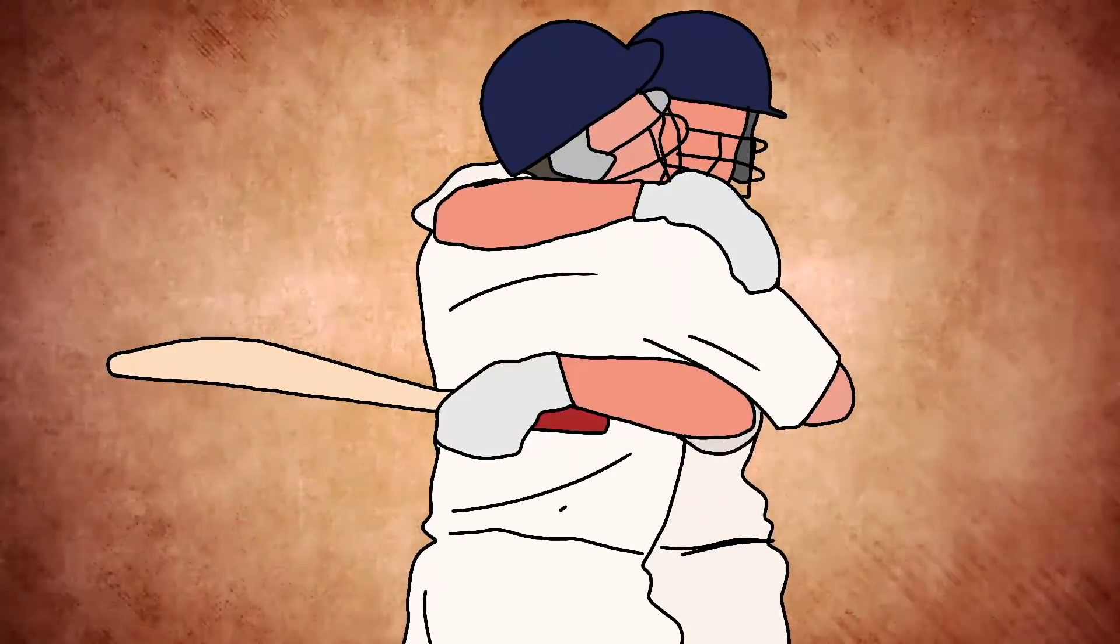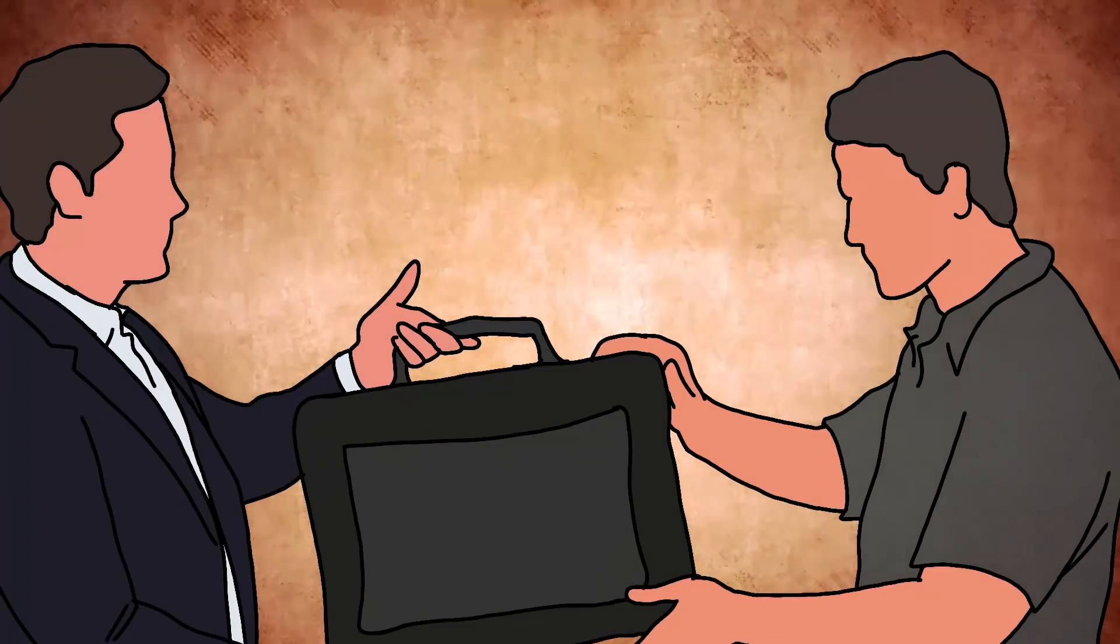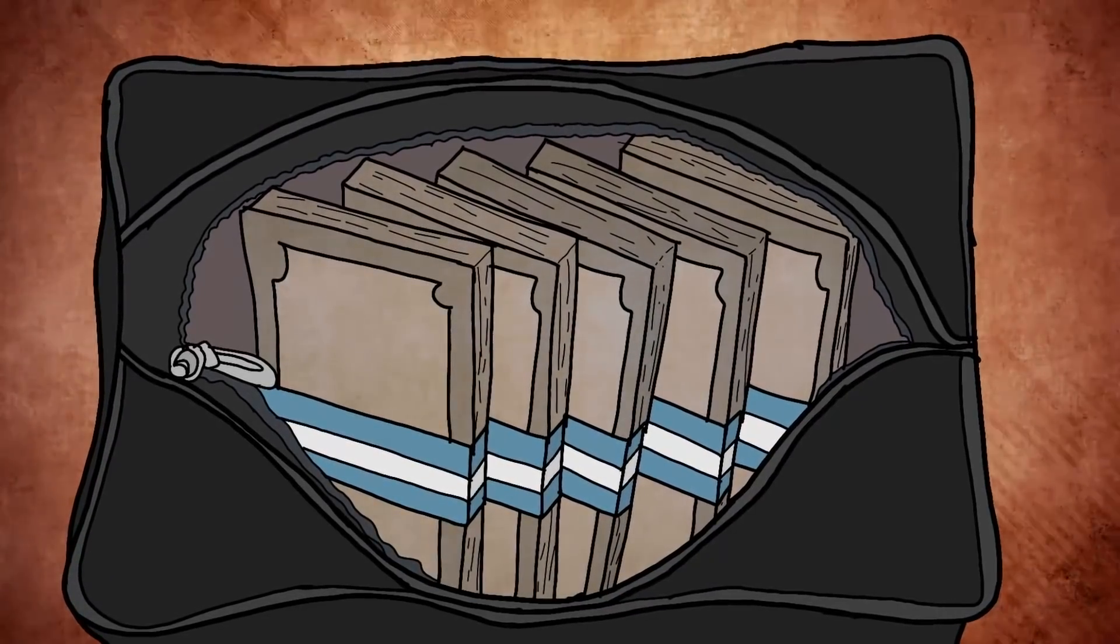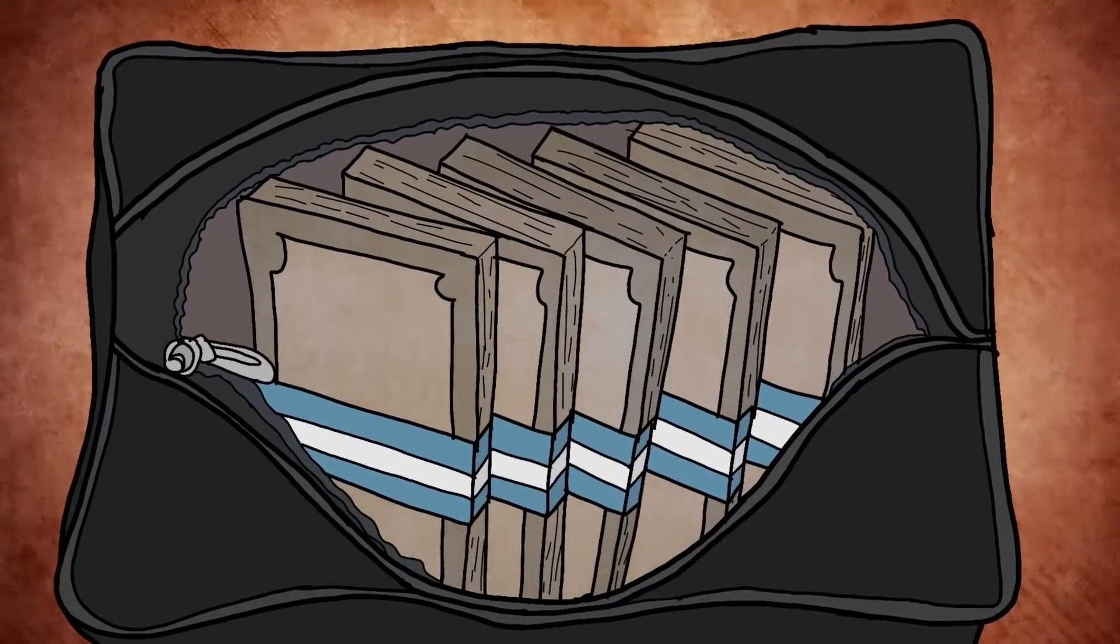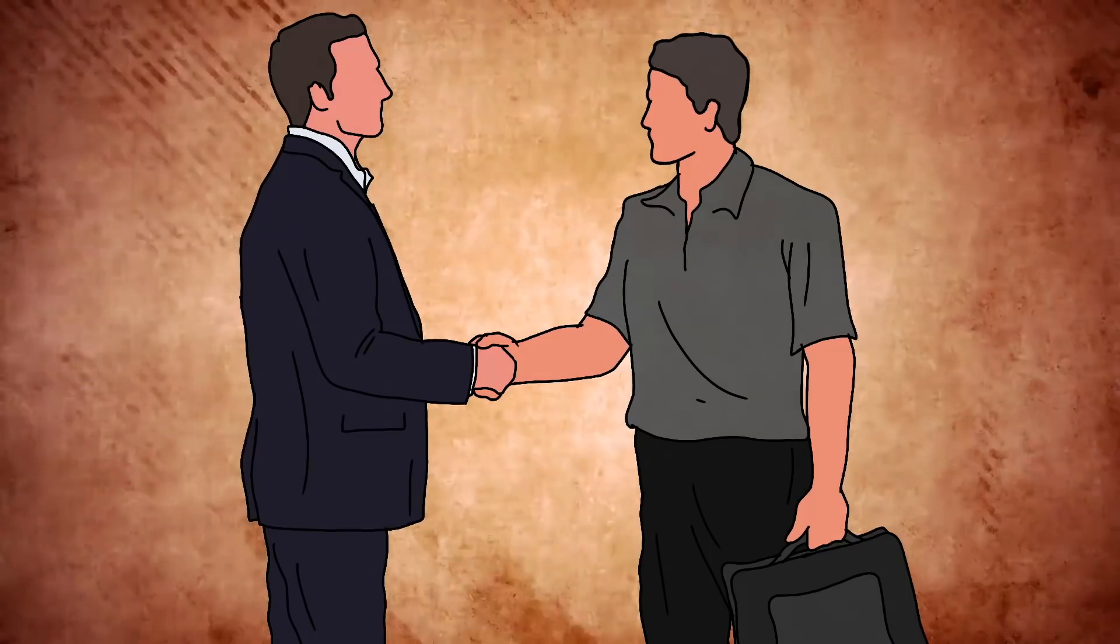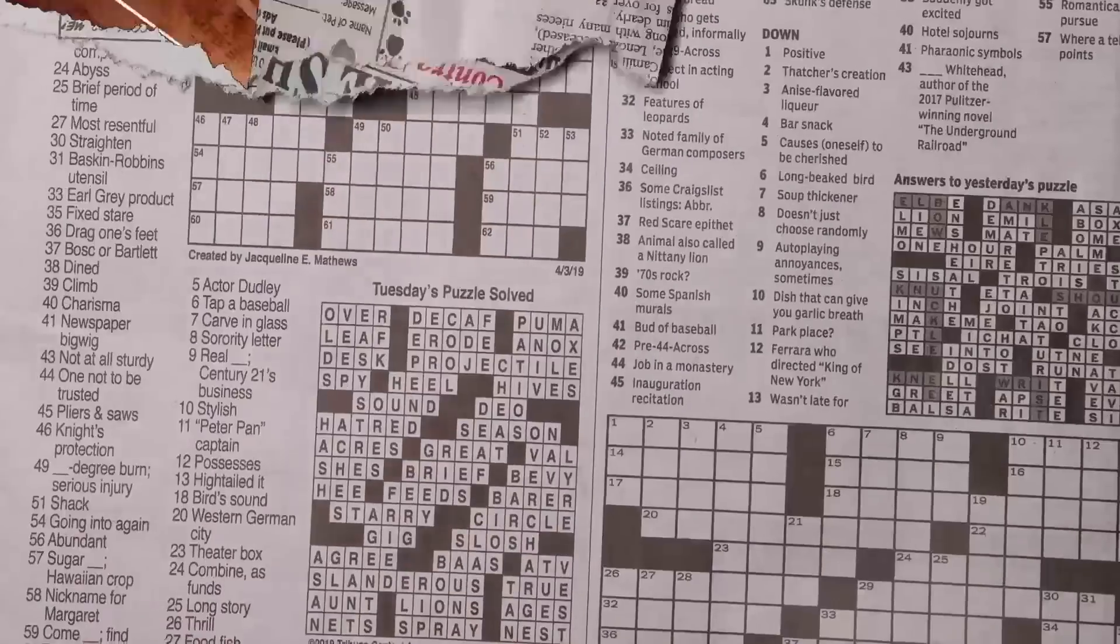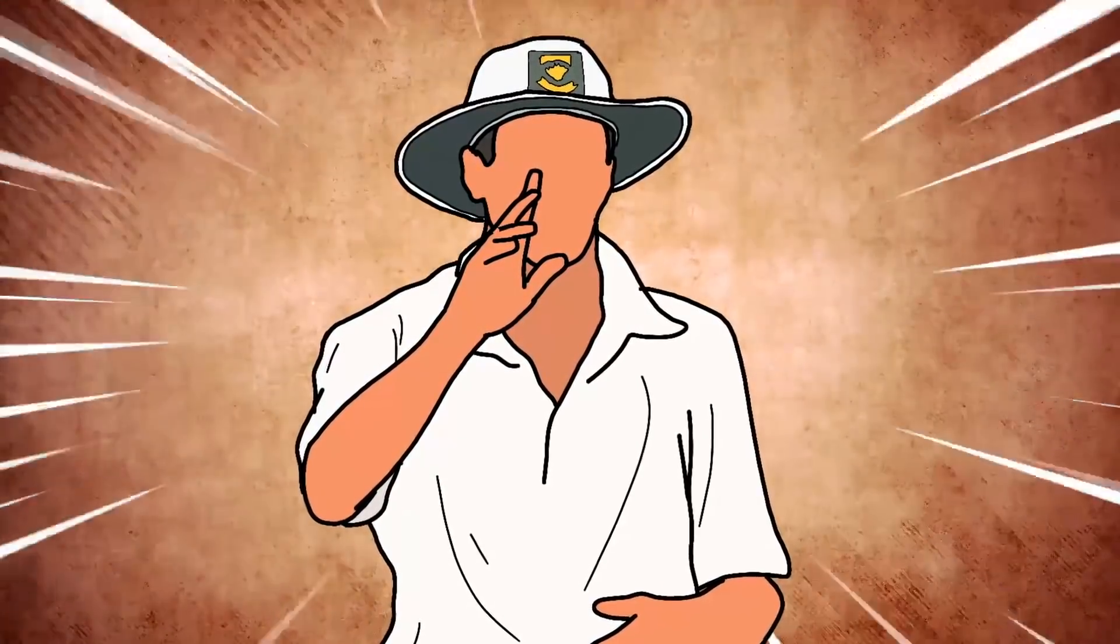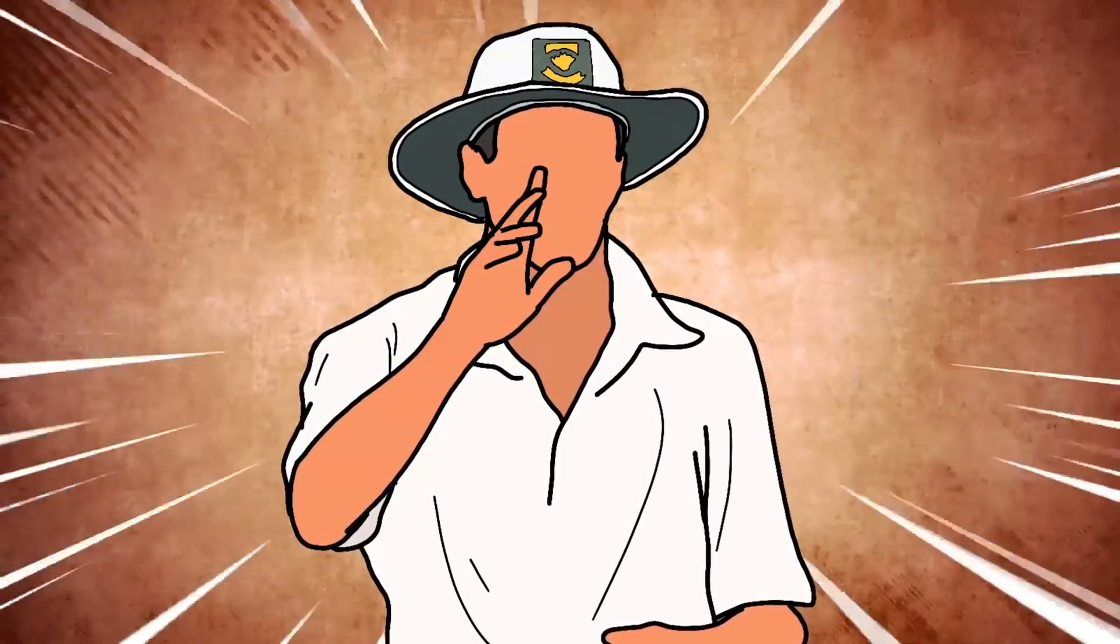After the match, Marlon gave Hansey a bag with a leather jacket and 50,000 South African rands. This was Hansey's test. Will he accept it or will he refuse? He accepted it, and the rest as they say is history. This was the beginning of the end of Hansey Cronje and with him, the integrity of cricket at that point in time.